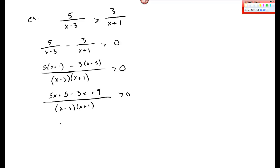And so I get 5x plus 5 minus 3x plus 9 all over this common denominator. And then I get, let's say, 2x, 5x minus 3x, but plus 14, over x minus 3 and x plus 1.